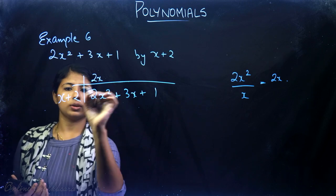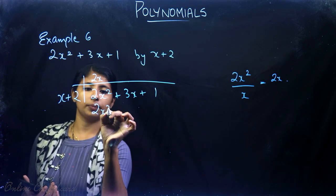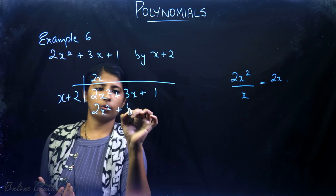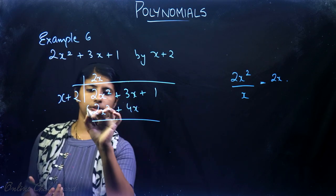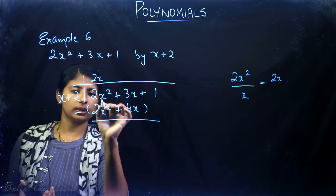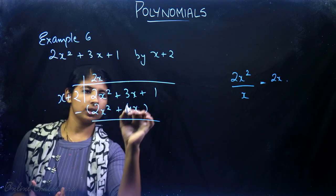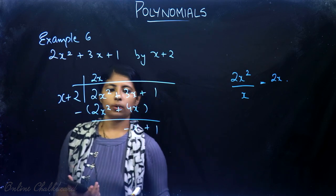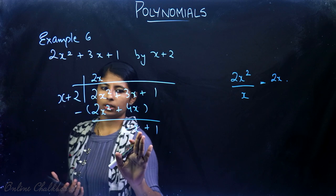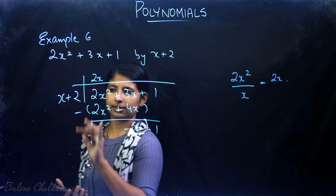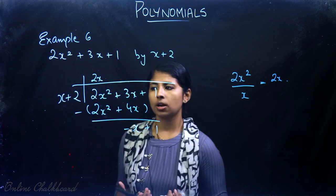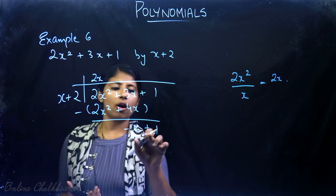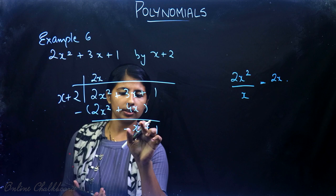Now apply the division process: 2x into x is 2x², and 2x into 2 is 4x. Then subtract: 2x² minus 2x² is 0, and 3x minus 4x is −x, bringing down +1. Now the degree of the remainder −x + 1 is not less than the divisor, so we apply the division process again. Divide −x by x to get −1.